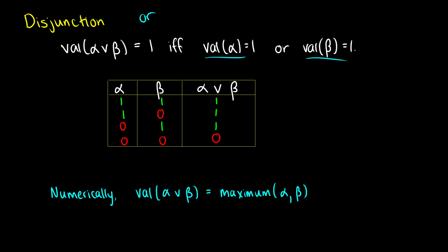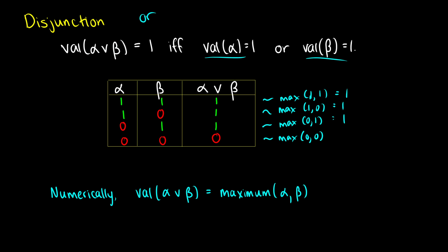Numerically, the conjunction took the minimum value. With 'or,' we just take the maximum value. In the first row, the maximum of 1 and 1 is 1, so that's true. In the second row, we take the maximum of 1 and 0 — the highest number there is 1. In the third row, alpha is false but beta is true — the highest number of 0 and 1 is 1. In the last row, alpha is 0 and beta is 0 — the highest value out of 0 and 0 is 0. So that's another way of getting our truth table numerically.